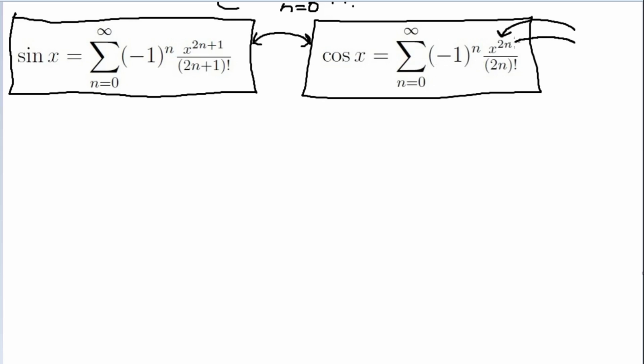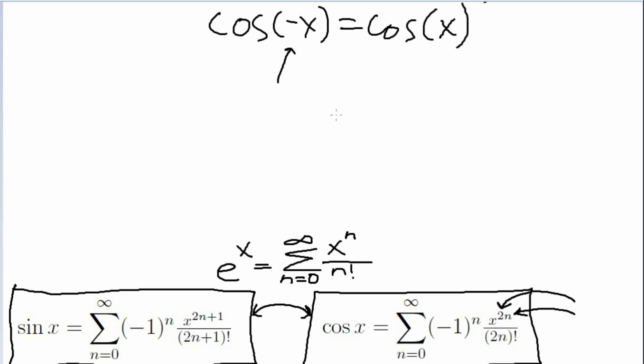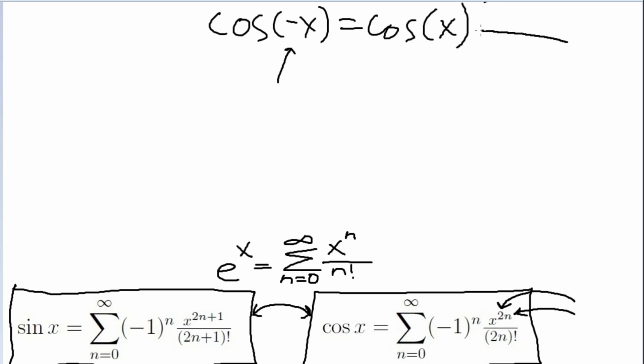If we're raising it to an even power, what will come out will always be positive. So that already gives us a hint that this property is going to be true. Cosine of negative x is going to be the same thing as cosine of x.